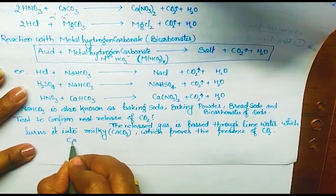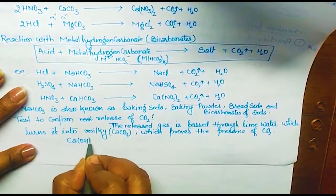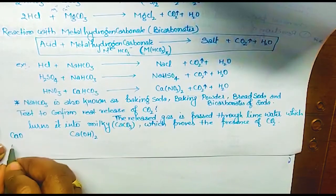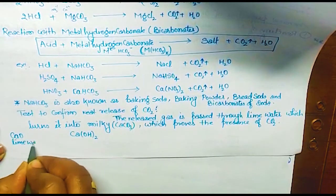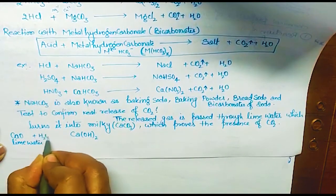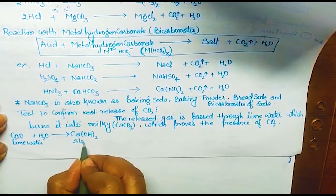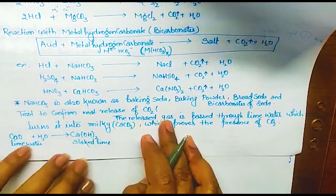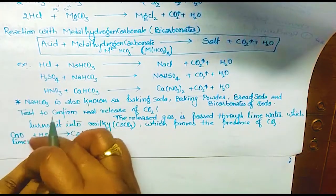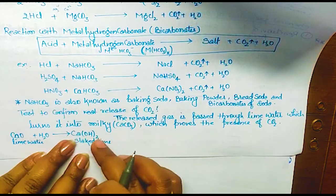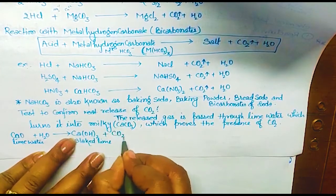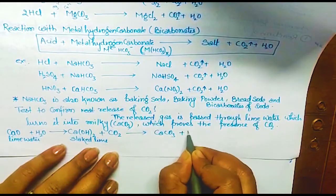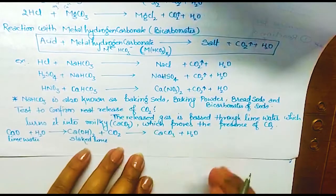The reaction is: Ca(OH)2 plus CO2 gives CaCO3 plus H2O. Lime water is CaO dissolved in water, which forms Ca(OH)2. When CO2 is passed through it, insoluble CaCO3 precipitates, turning the solution milky. This proves the release of carbon dioxide gas.